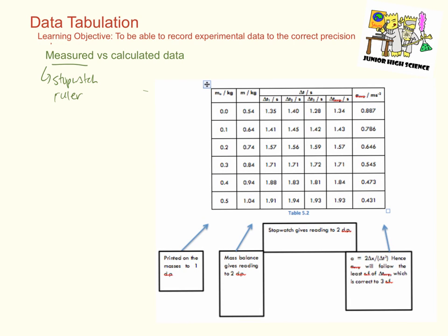So for example, for a stopwatch, our stopwatch that we use gives us data correct to two decimal places in seconds. So we say that the precision of the stopwatch is 0.01 second.